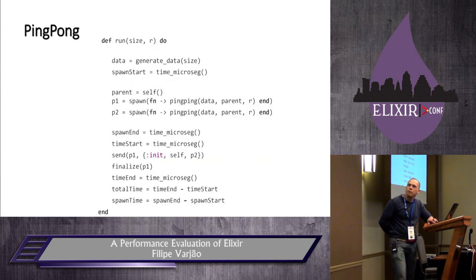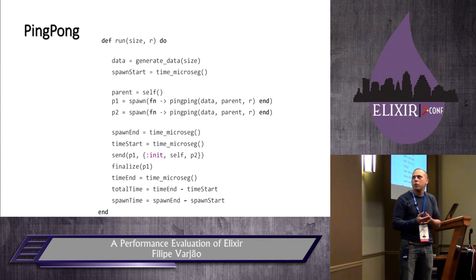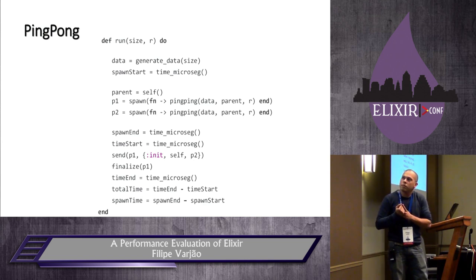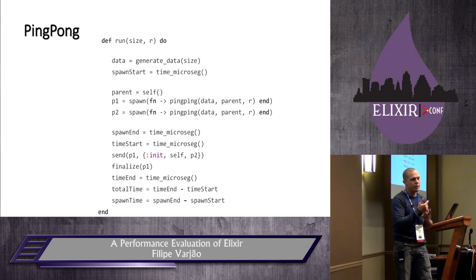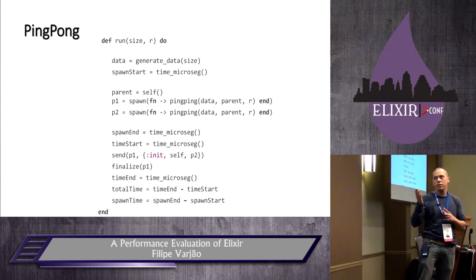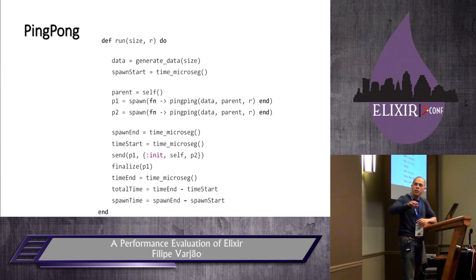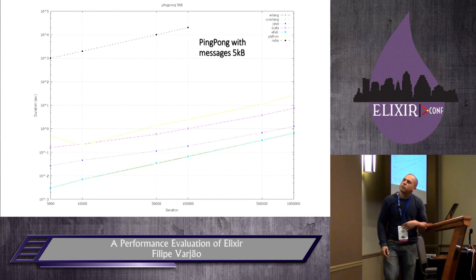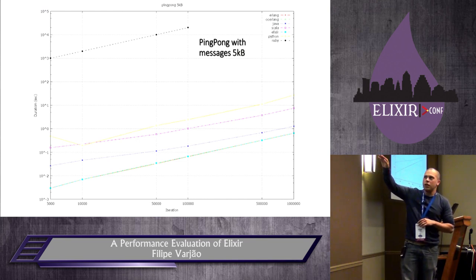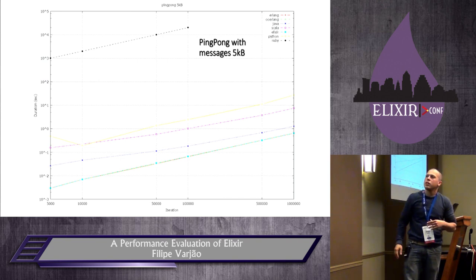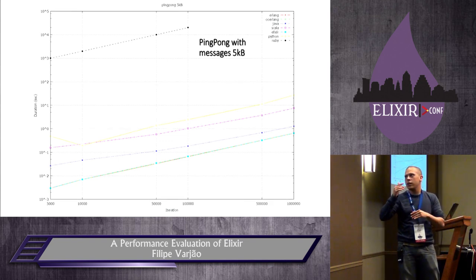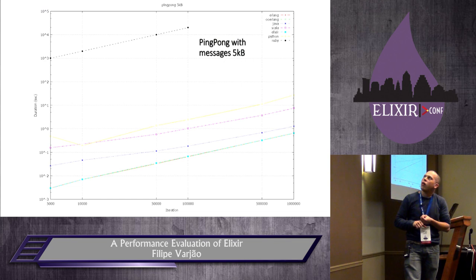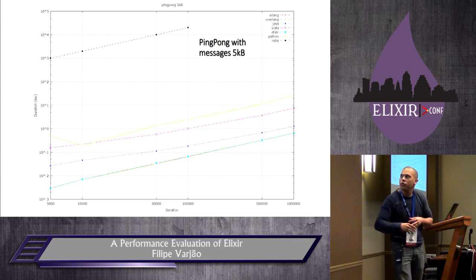The ping-pong code is similar to ping-ping — the only difference is that process 1 sends a message to process 2, and then process 2 sends another message back to process 1. It's a synchronous test. We only need to finalize one process. In the ping-pong results, Python is yellow, purple is Scala, Java is blue, and on the same lower line we have Erlang, Erjang, and Elixir — for all repetitions.